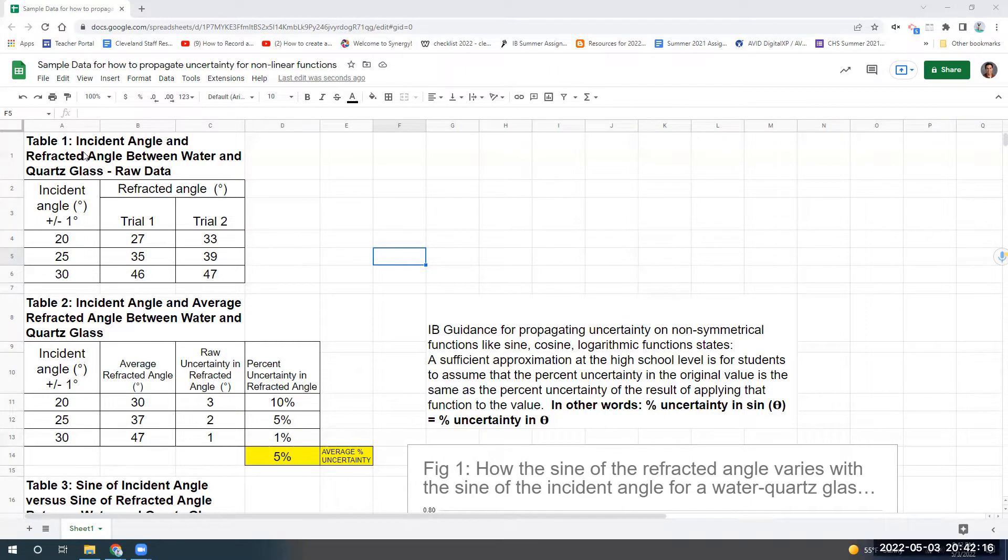Here's an example that's very common in the IB physics curriculum. Let's say you take some data, you shine a laser through a substance into another substance to look at the index of refraction and Snell's law. Notice here are three data points that I made up. You have the incident angle 20, 25, and 30 in table one here, and then two trials of the refracted angle. So let's say I need to do a linearization test with a min-max gradient to see to what extent this data set follows Snell's law and perhaps to calculate something using the slope of the best fit line. So what I need to do is I need to transform this data.